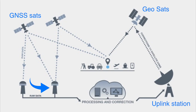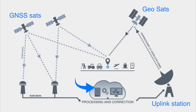SBAS uses GNSS measurements taken by accurately located reference stations deployed across an entire continent or region. All measured GNSS errors are transferred to a central computing center where differential corrections and integrity messages are calculated and generated. These calculations are then broadcast over the covered area using geostationary satellites that serve as an augmentation or overlay to the original GNSS message.